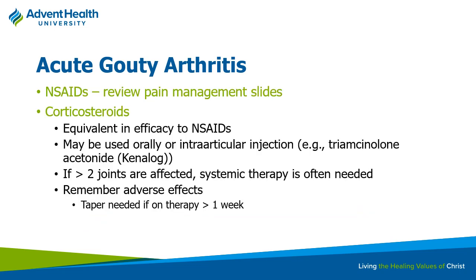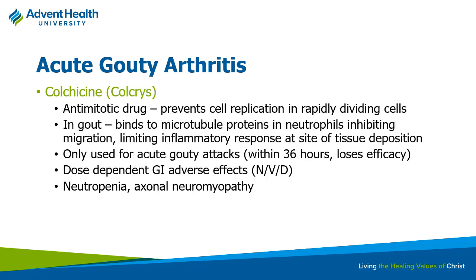NSAIDs are well understood from pain management. Corticosteroids are typically just as efficacious but have more side effects. Occasionally intra-articular injections of something like triamcinolone are used for acute gout, similar to osteoarthritis. If patients are on corticosteroids for more than a week, they need to taper—otherwise adrenal insufficiency can occur, causing blood pressure and glucose to go out of control.